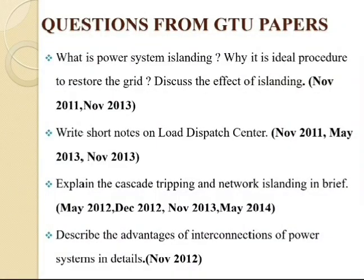Now we look at questions from GTU papers. From this chapter, mostly four questions are asked in the external exam. First: what is power system islanding, why is it an ideal procedure to restore the grid, and discuss the effects of islanding. Second: write a short note on Load Dispatch Center. Third: explain cascade tripping and network islanding in brief. Fourth: describe the advantages of interconnection of power system in detail.